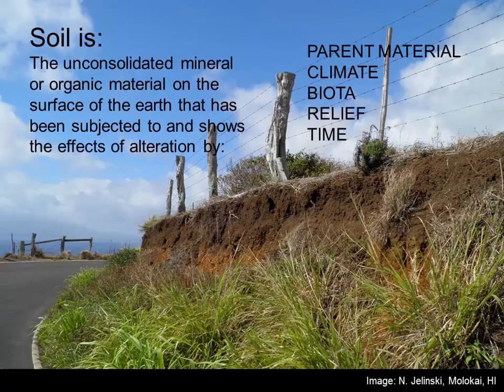Soil has many definitions. There are arguments over whether there's soil on the moon. Here's one definition: soil is the unconsolidated mineral or organic material on the surface of the earth that has been subjected to and shows the effects of alteration by — and these are our five soil forming factors — parent material, climate, biota or organisms, relief, and time.